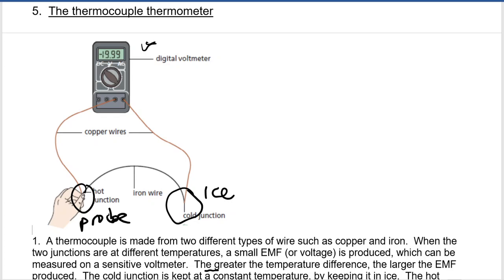Now the advantages of using a thermocouple thermometer is that it can measure rapidly varying temperatures. Because of the very low heat capacity of the junctions, it is possible to measure very rapidly changing temperatures.